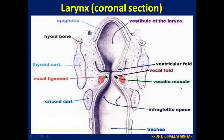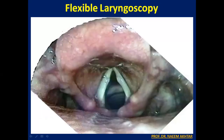This is the coronal section of the larynx. Now, this is the view of the larynx when we perform flexible laryngoscopy. You can see the epiglottis, the two aryepiglottic folds, the two vocal cords, and below the vocal cords, the tracheal rings visible through flexible laryngoscopy.